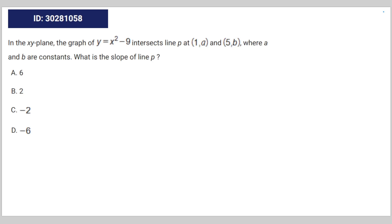We're given the following math question. In the xy-plane, the graph of y equals x squared minus 9 intersects line P at (1,a) and (5,b), where a and b are constants. What is the slope of line P?